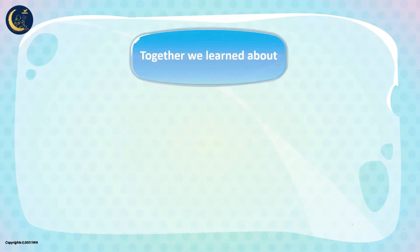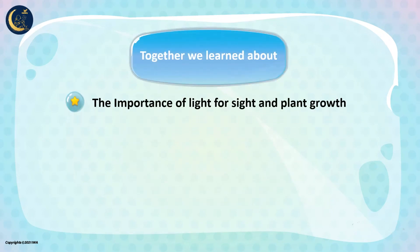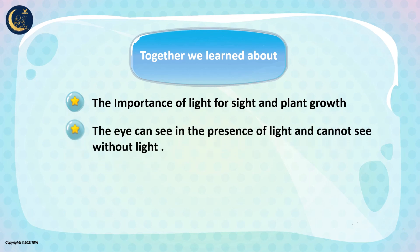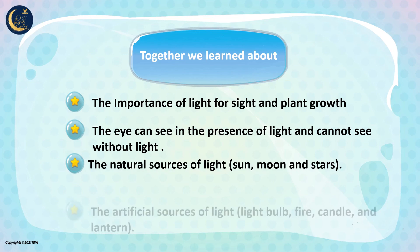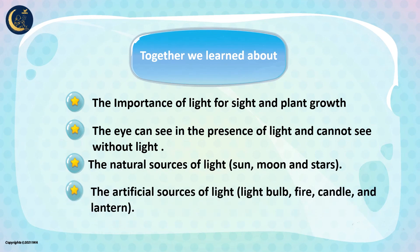We learned about the importance of light for sight and plant growth, and we learned that the eye can see in the presence of light and cannot see without light. We also learned the natural sources of light, which are the sun, moon, and stars, and the artificial sources of light, which are light bulbs, fire, candles, and lanterns.